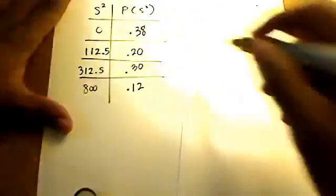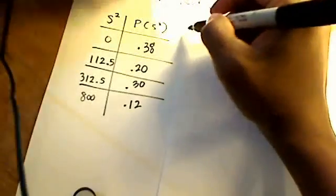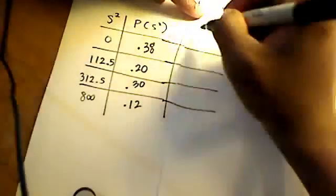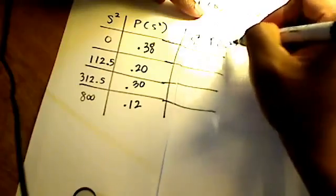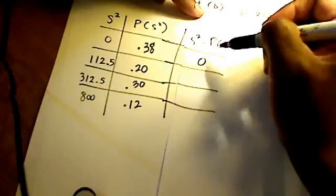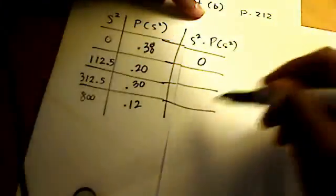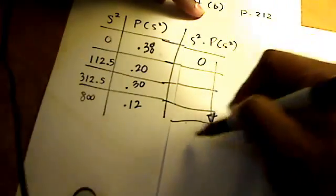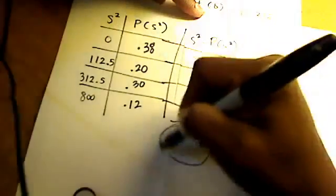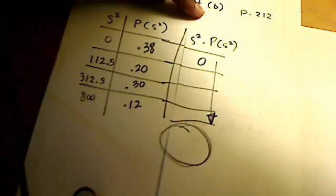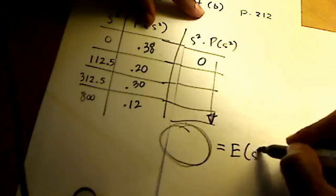Last but not least, to finish off Part B, we're looking for the expected value. Expected value is simply, as you saw in Part A, the product of s squared times its probability. Obviously 0 times 0.38 is still 0, and 112.5 times 0.20 is a particular value. When we're done, we're just going to add them all up, and we're going to come up with a sum. Whatever that sum is, that magical sum, is our expected value of the population variance, s squared.